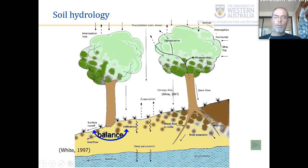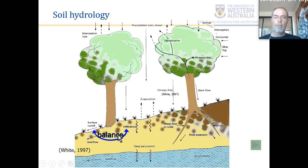Outputs include deep percolation or leaching, plant uptake and transpiration, bare soil evaporation, and what is called interflow or lateral flow. This is taken from Bob White's textbook, available as an ebook in the 2006 version, which may have an even better version of this diagram. We'll leave it there — hopefully see you in person for the next lecture.